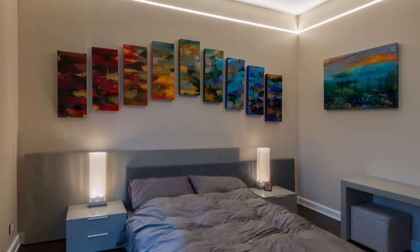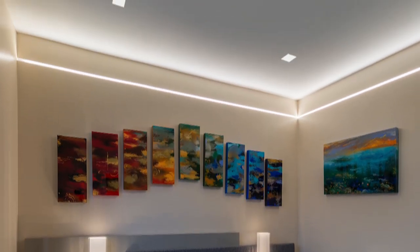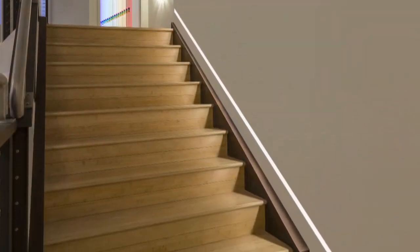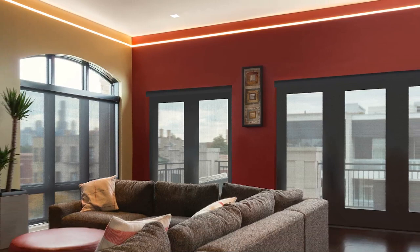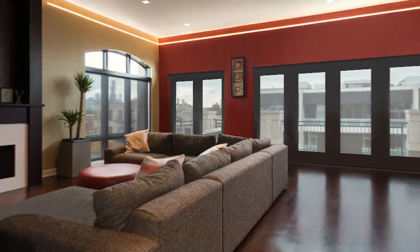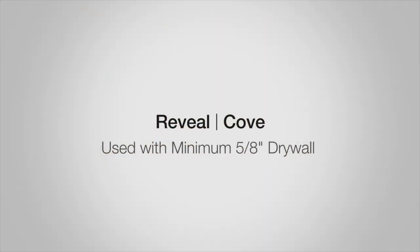Reveal is a recessed linear LED system that recesses within 5/8 inch drywall and projects light either upward onto the ceiling or downward toward the floor. Reveal can be personalized to span from wall to wall for a truly contemporary appearance. This short video will demonstrate the five easy steps to install the Pure Lighting Reveal system spanning between two walls.